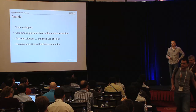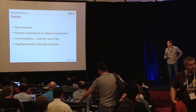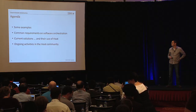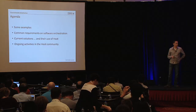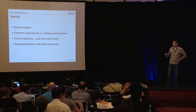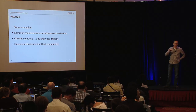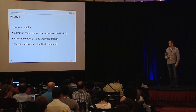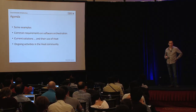I want to get started with a couple of examples to give you a better feeling for what kinds of workloads we are talking about. Based on those examples, I'm deriving some common requirements that we think are important for software orchestration. Then we'll present our solutions for software orchestration and how we use Heat in those solutions. Finally, just a couple of words on ongoing activities in the Heat community — this is not a design proposal presentation, just a brief summary of the discussions going on.